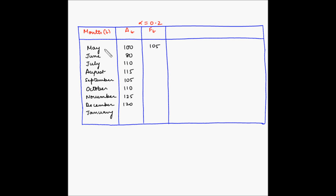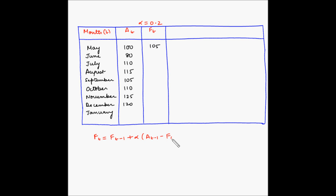I have listed months from May through January. We have been given the actual demand for May through December and the forecast for the month of May. The value of alpha is 0.2. The formula for calculating forecast using the exponential smoothing method is: forecast for period T equals forecast for period T-1 plus alpha times (actuals for period T-1 minus forecast for period T-1).